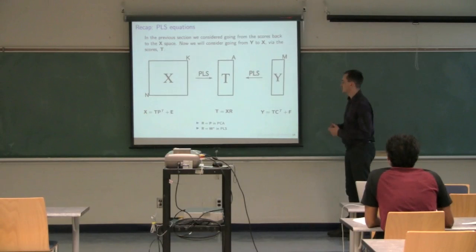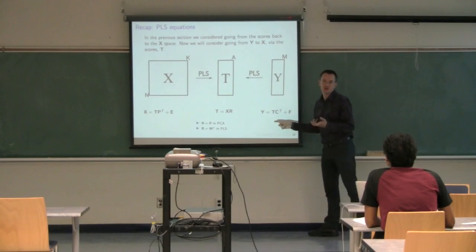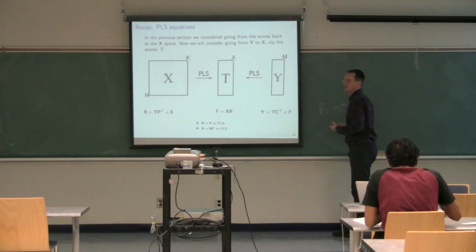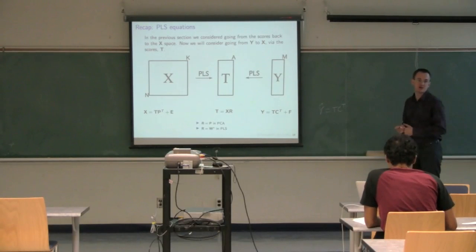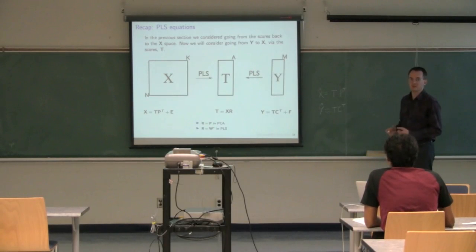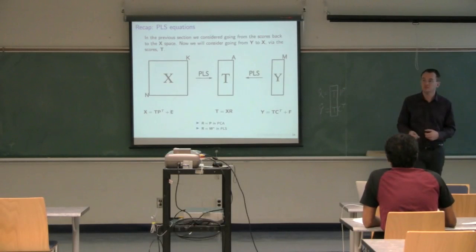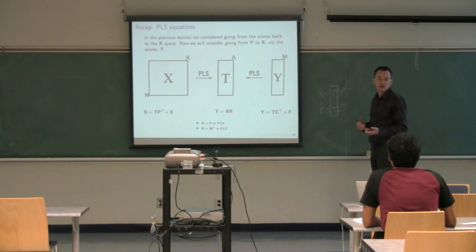The model for the Y-space has the same structure: Y equals TC transpose plus residual F. So TC transpose is our best prediction of Y — Y-hat equals TC transpose. Once we have our scores T, we can get predictions of Y by multiplying by the C transpose matrix, and predictions of X by multiplying by P transpose. The commonality are these scores T — that's what's holding it all together, and it's exactly how PLS calculates the scores.